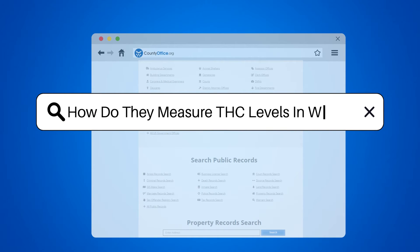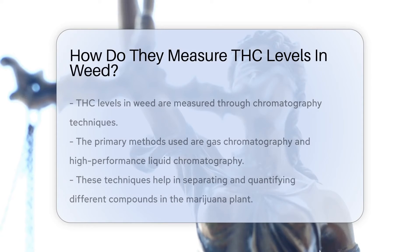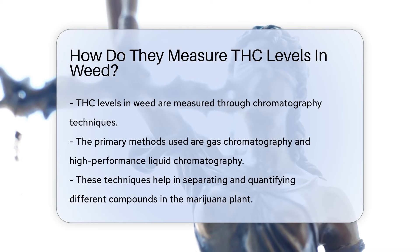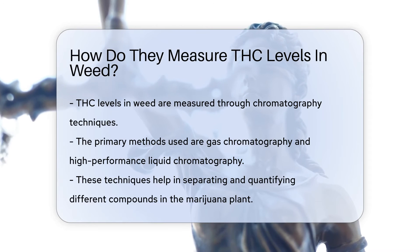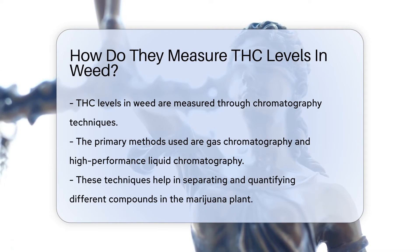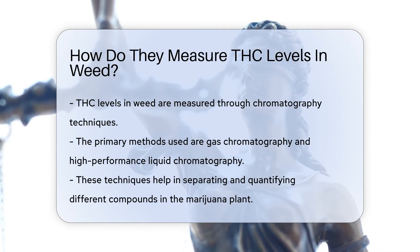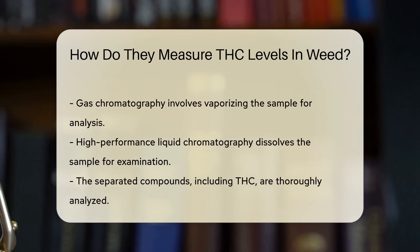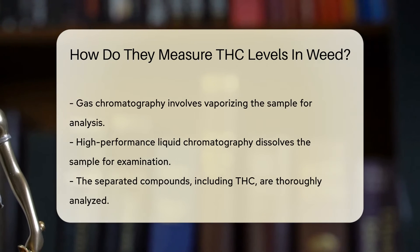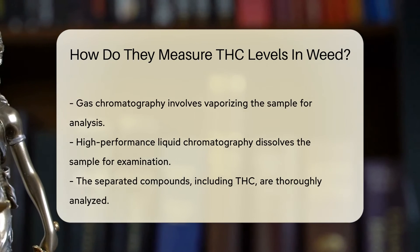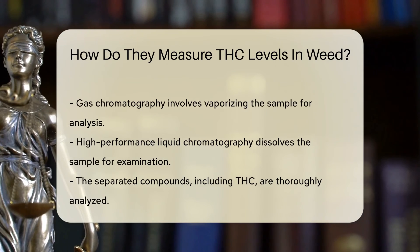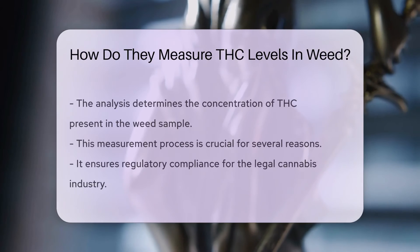How do they measure THC levels in weed? THC levels in weed are measured using chromatography techniques, specifically gas chromatography or high-performance liquid chromatography. These methods separate and quantify the different compounds in the plant, including THC. Gas chromatography vaporizes the sample, while liquid chromatography dissolves it.